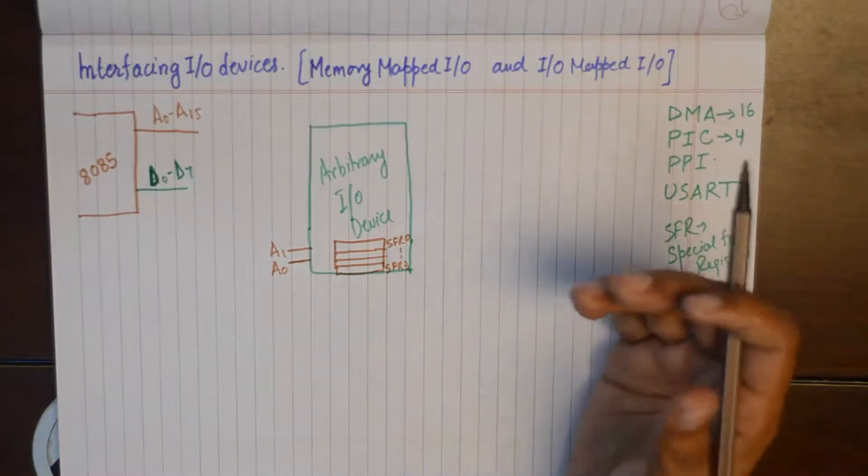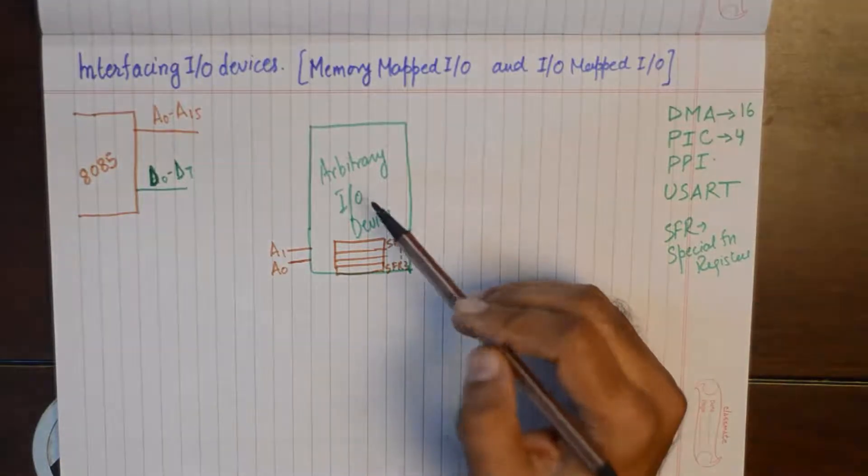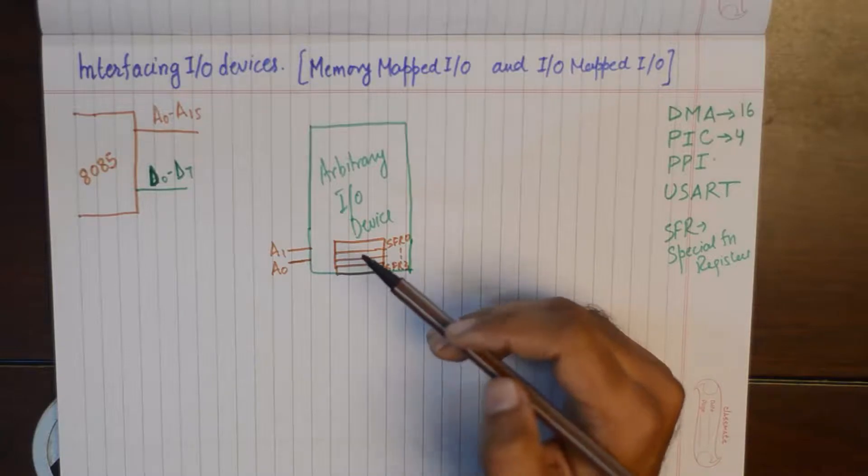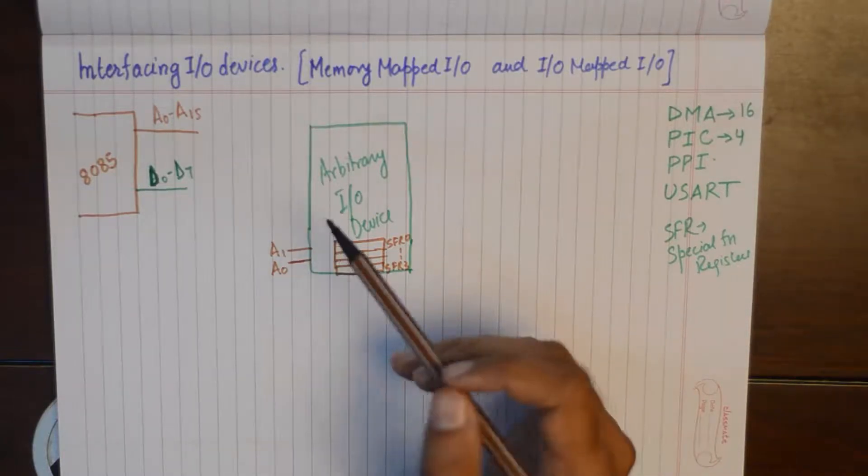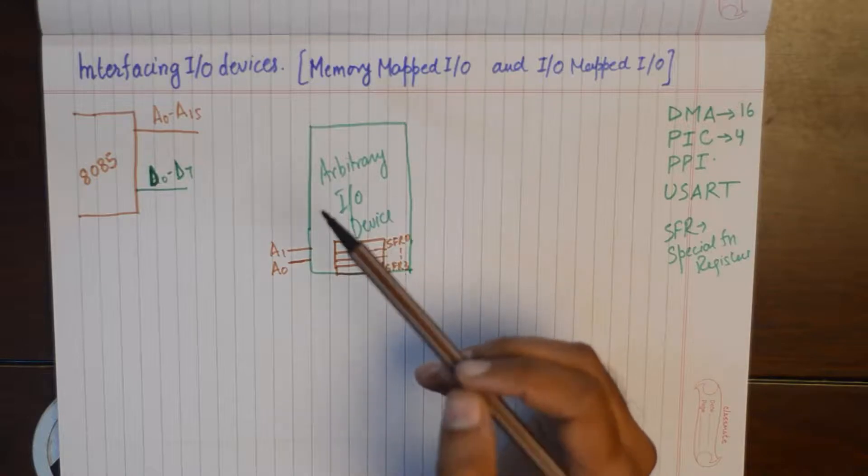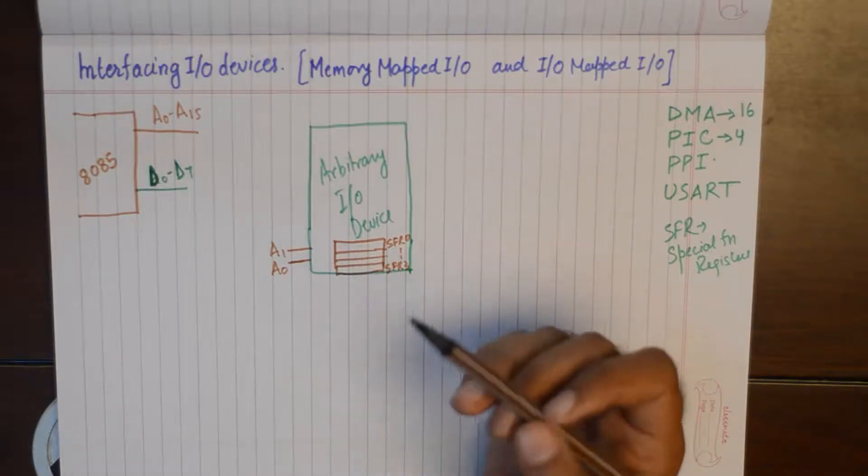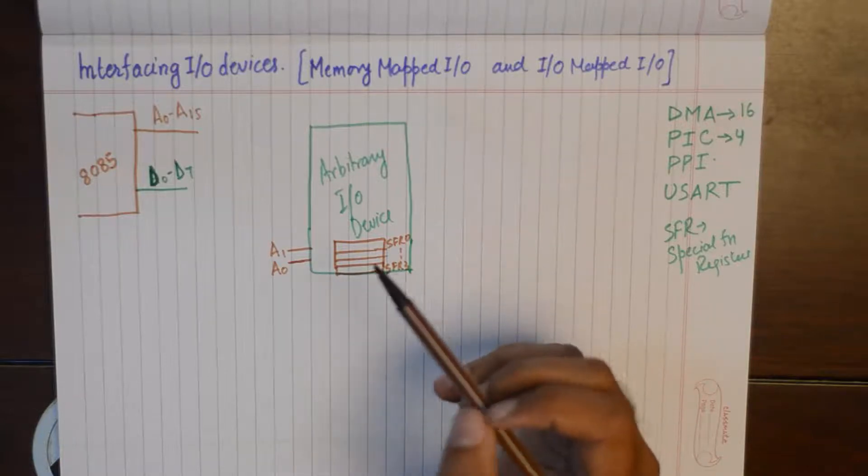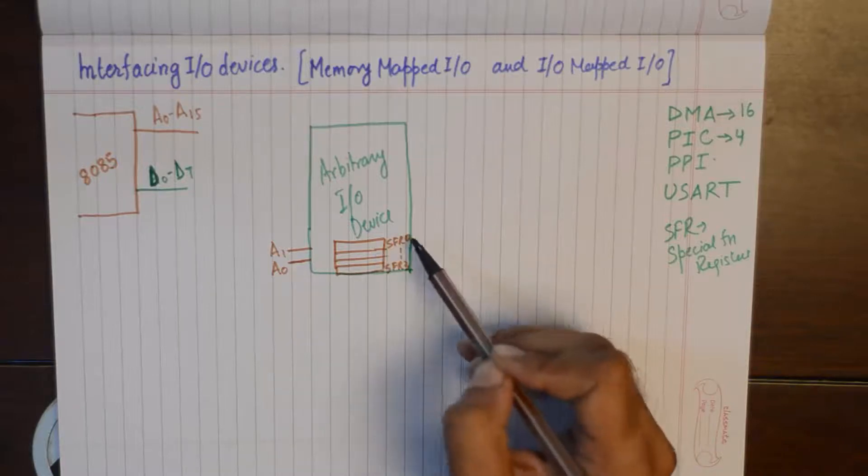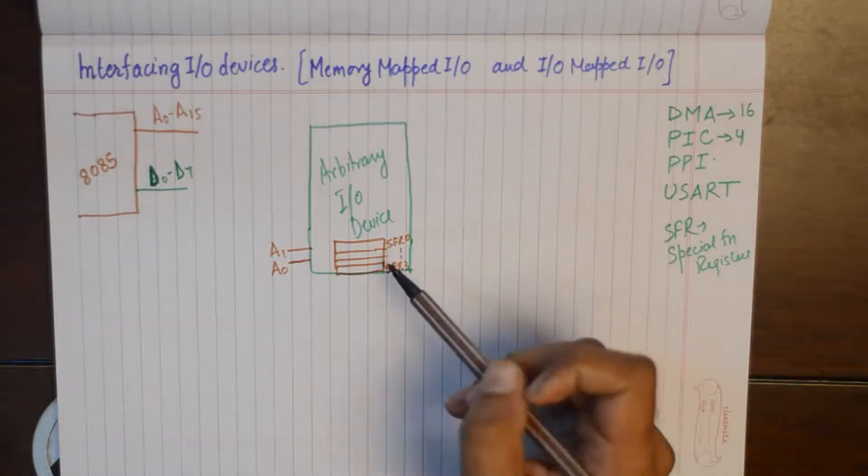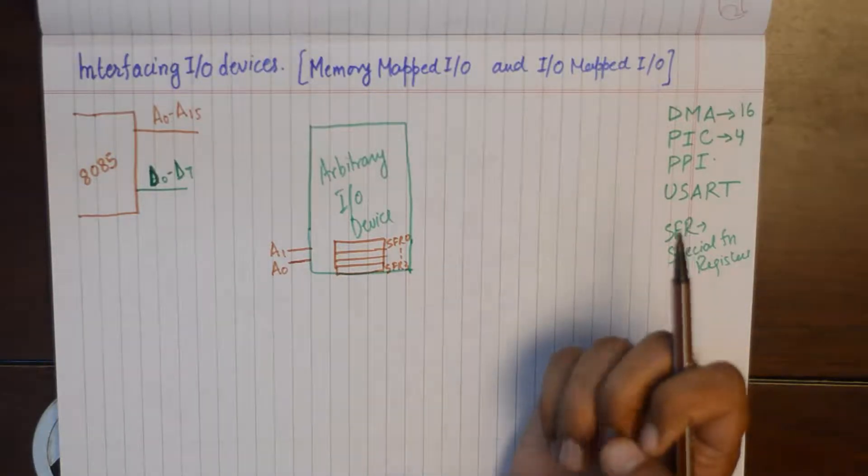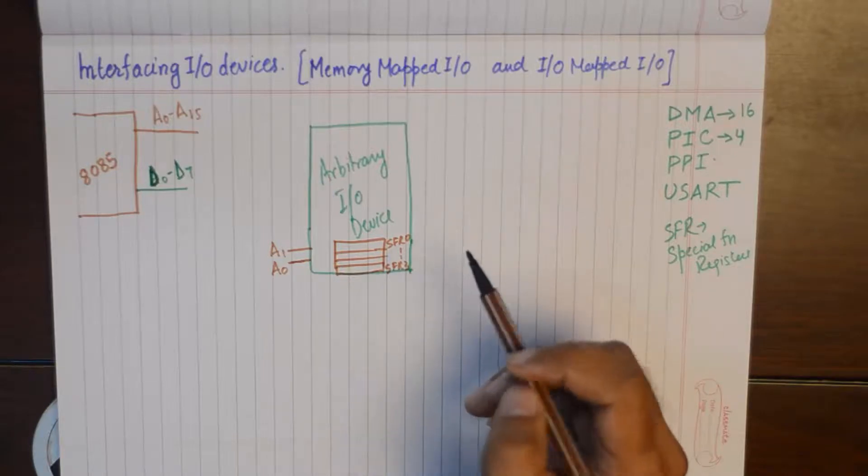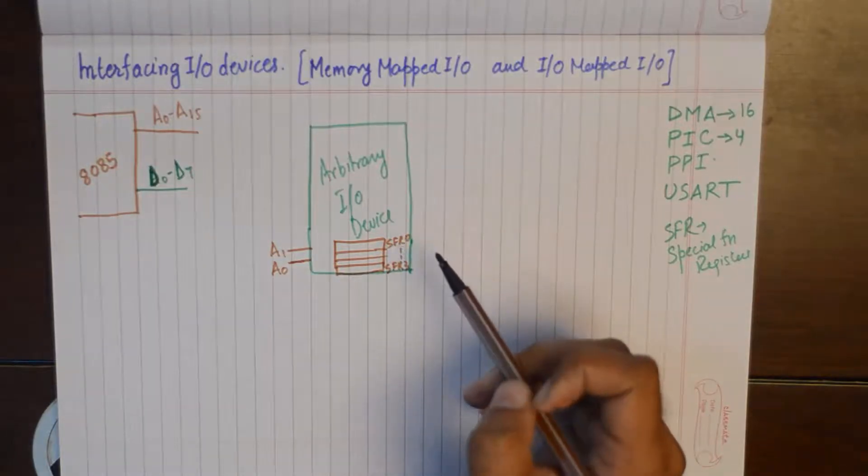For example, we take an arbitrary I/O device. Now this arbitrary I/O device only has 4 special function registers inside. Now because it just has 4 special function registers, you will find only 2 address lines on the IC of this I/O device.